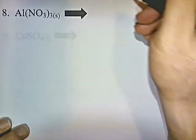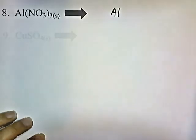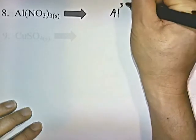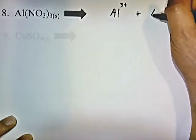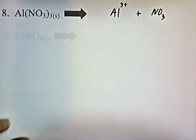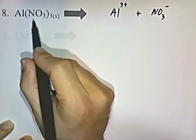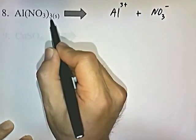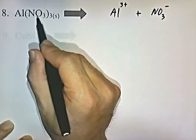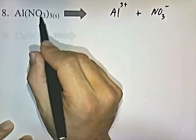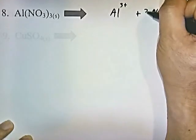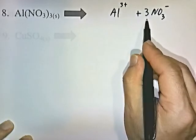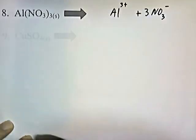Aluminum nitrate: Al is aluminum, which is in group 3A on the periodic chart — those elements have a plus 3 oxidation state. NO3 is nitrate, which has a negative 1 charge. Notice that nitrate is in parentheses and outside the parentheses is a 3, telling you there are 3 nitrates attached to 1 aluminum. We treat polyatomic ions as though they were a single element, so we take this 3 and swing it in front of the NO3.